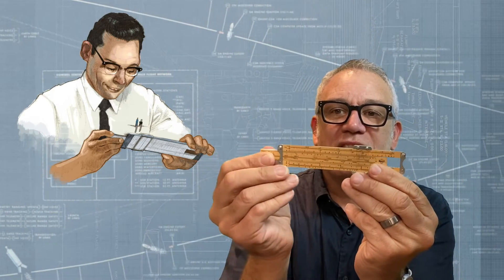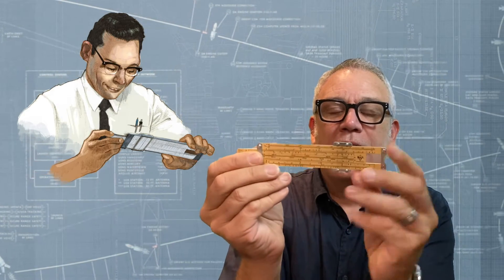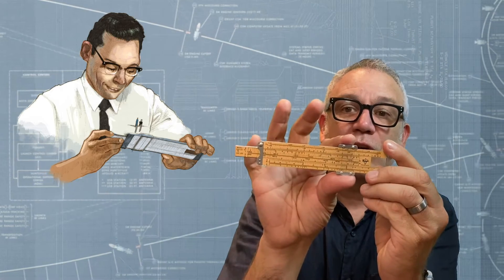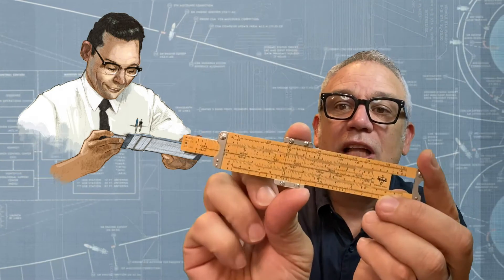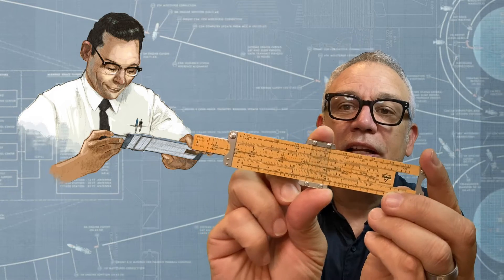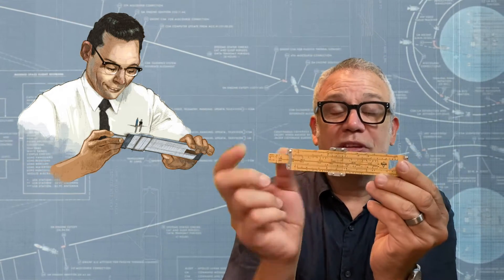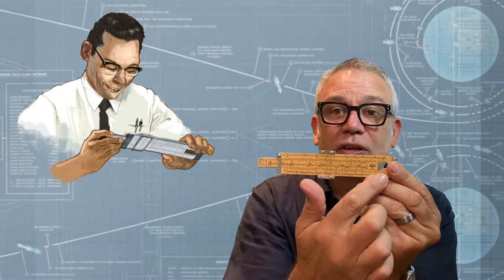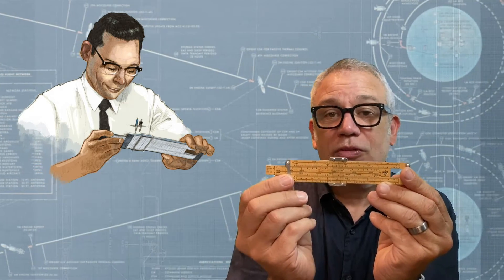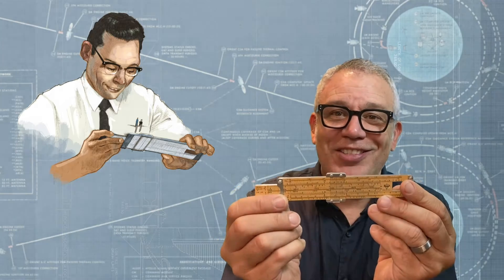And you also have this cursor which has a little line on it and you can slide that back and forth and line it up with different scales on these rulers to do math. I'm going to show you how. Here, check this out.